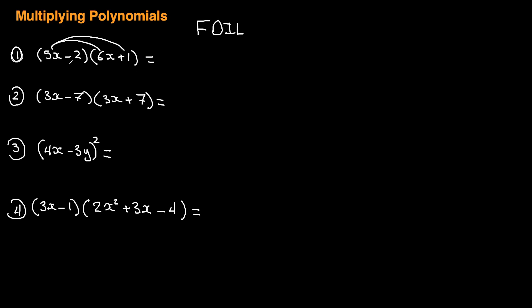Then you take the second term in the first brackets, which is the negative 2, and multiply it here and there. Let's do it step by step: 5x times 6x is 30x squared. 5x times positive 1 is plus 5x. Negative 2 times 6x is negative 12x. And negative 2 times positive 1 is negative 2.